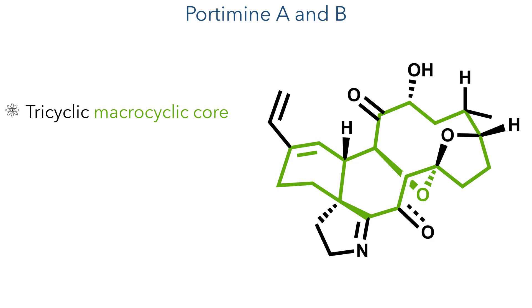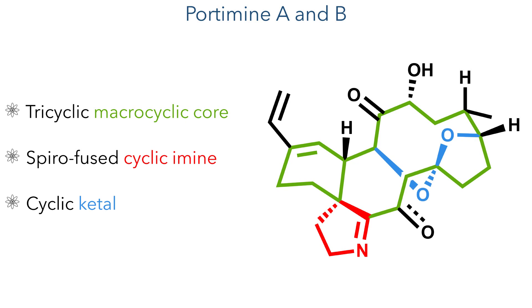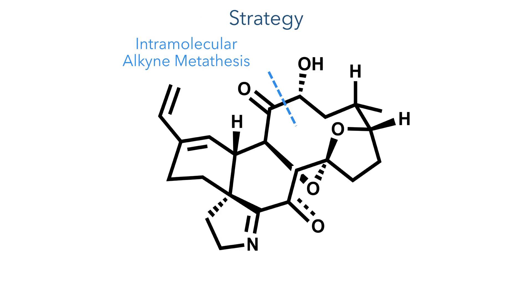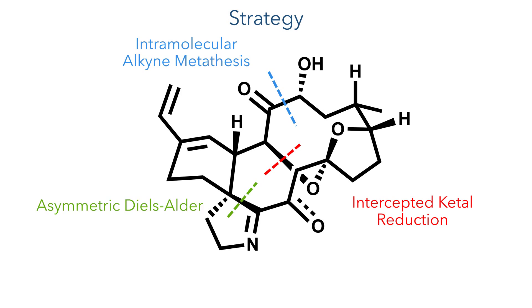The structure is quite intriguing, as it contains a tricyclic macrocyclic core with an independent spirofused cyclic imine. This macrocyclic core is spanned by a cyclic ketal linking the two sides of the molecule. The Baran group devised a very interesting strategy involving an intramolecular alkyne metathesis to form the macrocycle, an intercepted ketal reduction forming the trans-spanning ketal via ring-chain isomerism, and an inverse electron demand Diels-Alder to establish the scaffold necessary to form the cyclic imine.